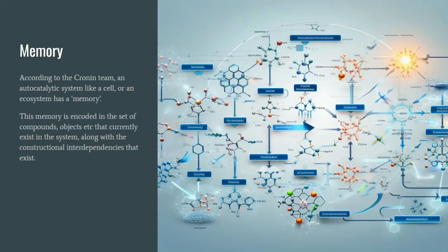Cronin makes the important point that an autocatalytic system, like a cell or an ecosystem, has a memory. And that memory is encoded in the set of compounds or objects that currently exist in the system, along with the constructional interdependencies that exist between these compounds.